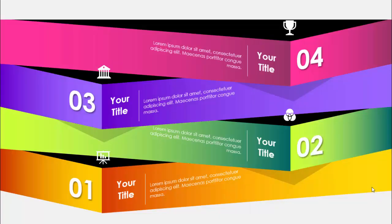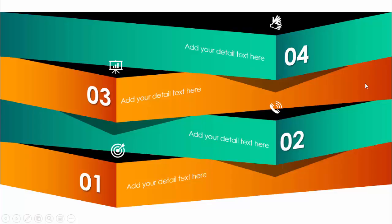In today's tutorial I am going to show you how to make a four-options 3D infographic slide in PowerPoint. I have added four options with gradient fill and each option comes with a different color combination. For each option you can add your detail text along with the title, and I have added an icon on top. I have also made a two-color version — whichever way you feel better, you can use it. Let's see how to do this in PowerPoint.